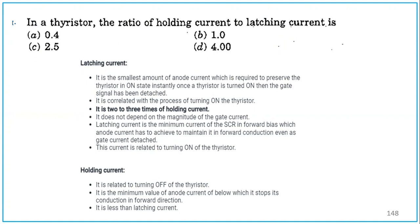Question number 11 is about, the answer to this question I am not giving you, I will just give you the theory. In a thyristor, the ratio of holding current to latching current is. What do you mean by latching current? It is the smallest amount of anode current which is required to preserve the thyristor in the ON state. Latching means turn ON. Once the thyristor is turned ON, then the gate has been detached. It is correlated to the process of turning ON of the thyristor. It has 2 to 3 times of holding current. So iL is equal to 2 to 3 times of iH.